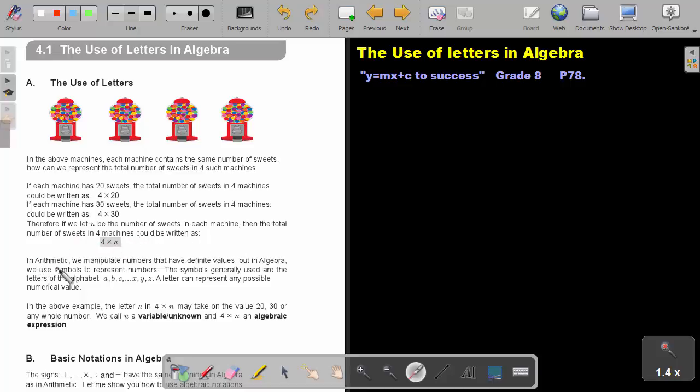In arithmetic, we manipulate numbers that have definite values. But in algebra, we use symbols to represent numbers. So we are using a symbol, an alphabet letter, to represent the number of sweets in each machine.